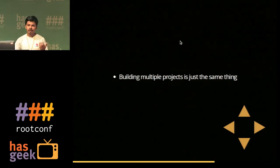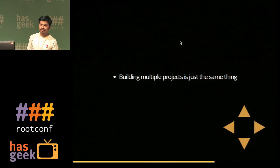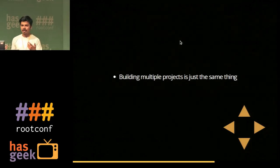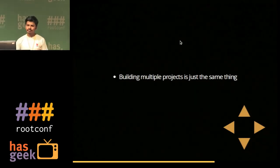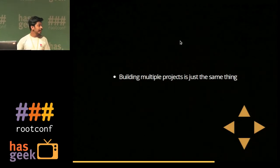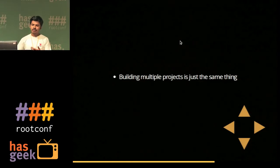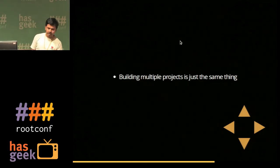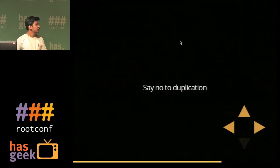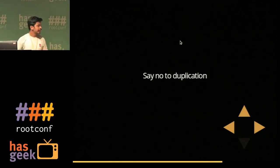The same thing applies to building multiple projects. If you have five repositories all building Scala code — doing `scala compile`, `scala test`, and `sbt make rpm` — they all do the same thing. Why not have one template with just different repository parameters? You're saying no to duplication.